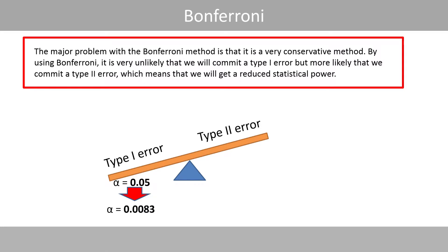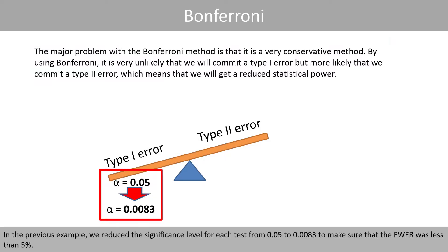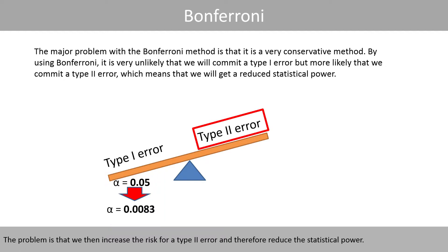The major problem with the Bonferroni method is that it is a very conservative method. By using Bonferroni, it is very unlikely that we will commit a type 1 error, but more likely that we commit a type 2 error, which means that we will get a reduced statistical power. In the previous example, we reduced the significance level for each test from 0.05 to 0.0083 to make sure that the family-wise error rate was less than 5%, but this increases the risk for a type 2 error and therefore reduces the statistical power.